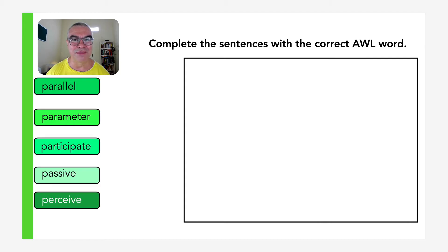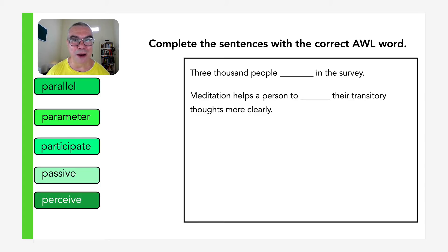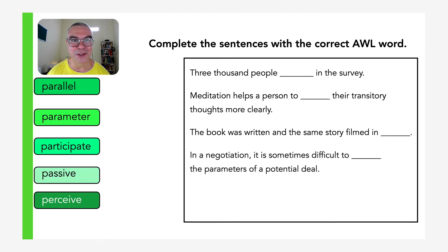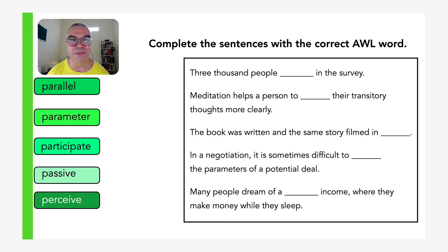To practice these words we'll start with a fill-in-the-space exercise. First sentence: three thousand people blank in the survey. Meditation helps a person to blank their transitory thoughts more clearly. The book was written and the same story filmed in blank — it does make sense when you fill in the correct word. In a negotiation it is sometimes difficult to blank the parameters of a potential deal. Many people dream of a blank income where they make money in their sleep.